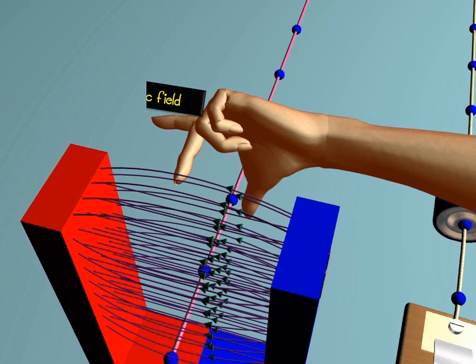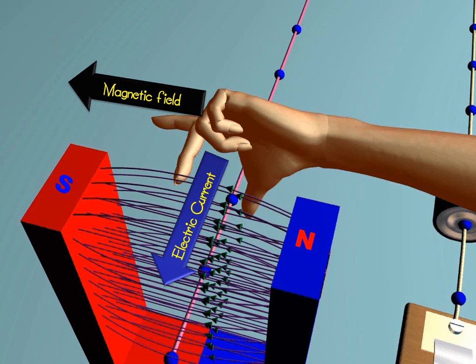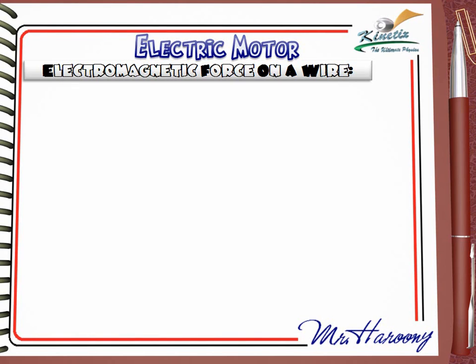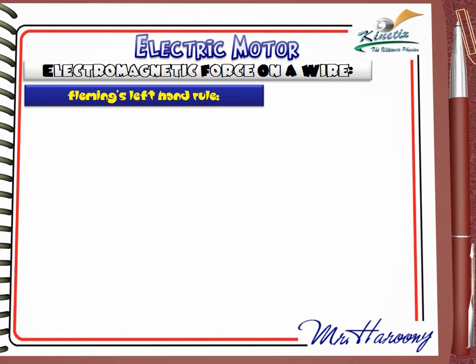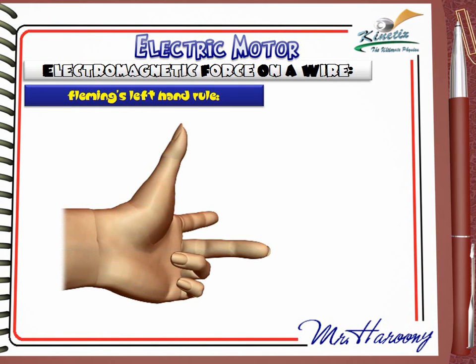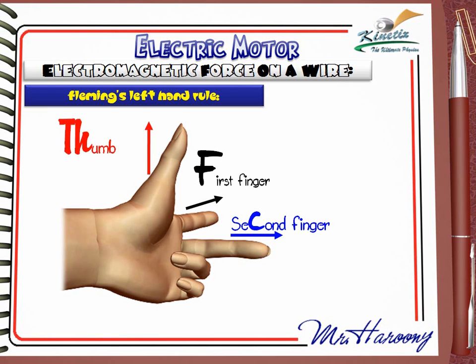Fleming's left hand rule states that if the first finger points in the direction of the magnetic field from north to south, and the second finger points in the direction of the conventional current from positive to negative, then the thumb will show the direction of the force pushing the wire. The finger with the black arrow is named the pointer or index finger, also called the first finger. The middle finger is the second finger.